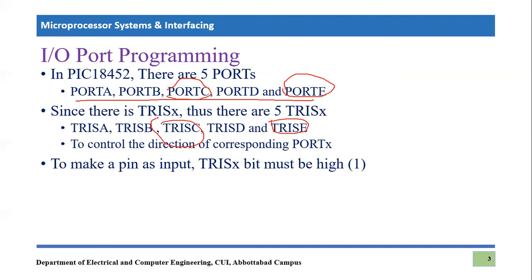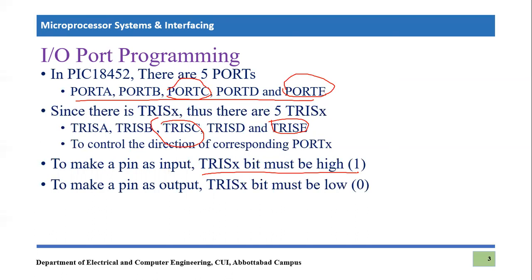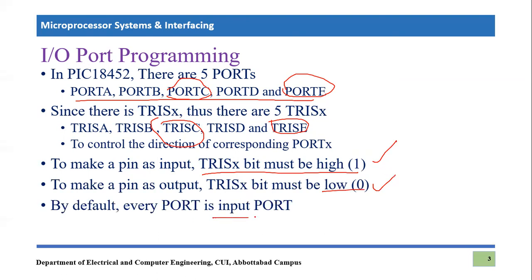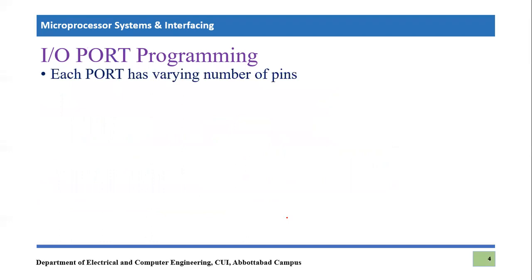To make a pin an input pin, TRIS-X must be set high — that means we need to put a logic high or send a VCC signal to the TRIS register. To make a pin an output pin, you need to provide logic low (zero). So: write 1 to make a pin input, write 0 to make it output. By default, every port is an input port — every pin which is part of a port is used as an input pin by default.